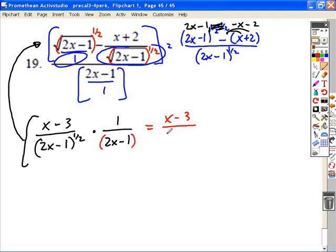You have a common base right here. So when we're multiplying exponents with the same base, you add the power. So one-half and two-halves or one is equal to three-halves.